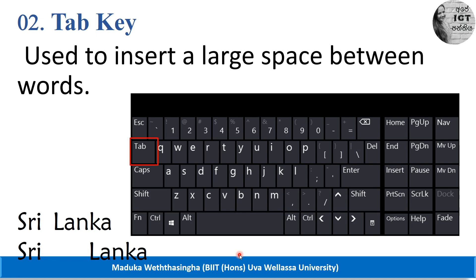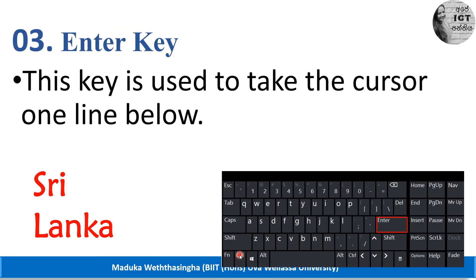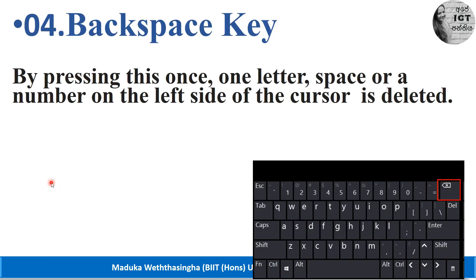The next key is the tab key. The tab key is also used to keep space between words or letters, but its speciality is that it keeps a large space. The enter key is used to take the cursor one line below — by pressing this key we can move the cursor to the line below.